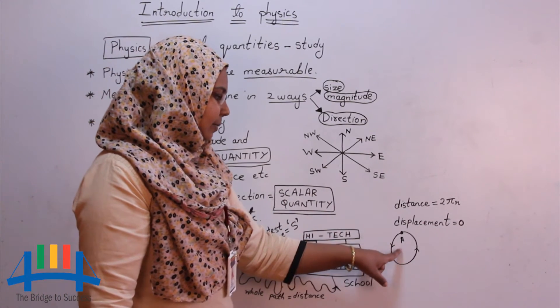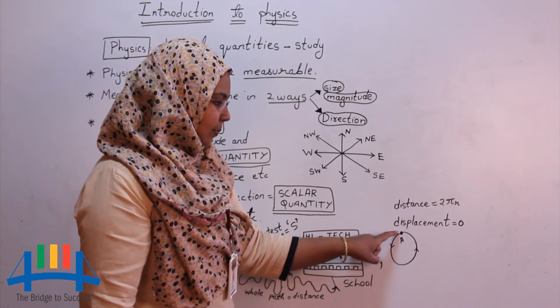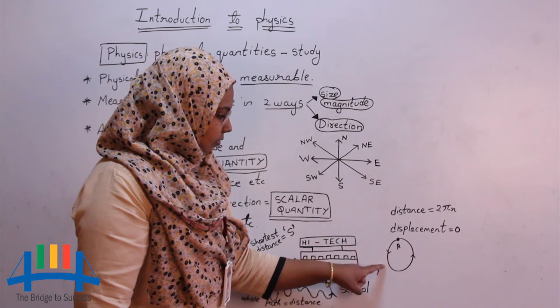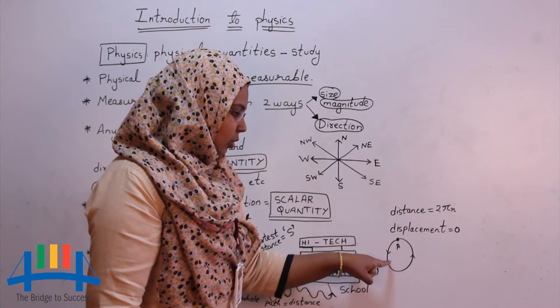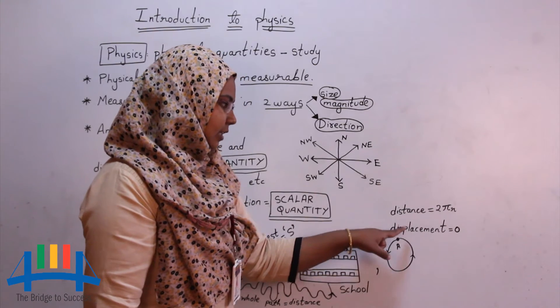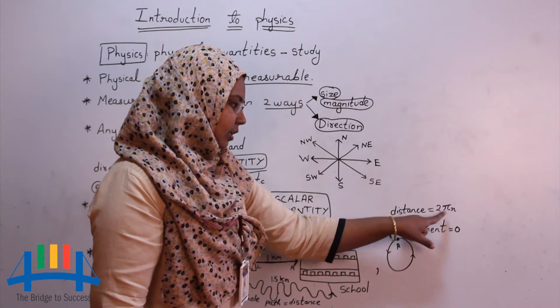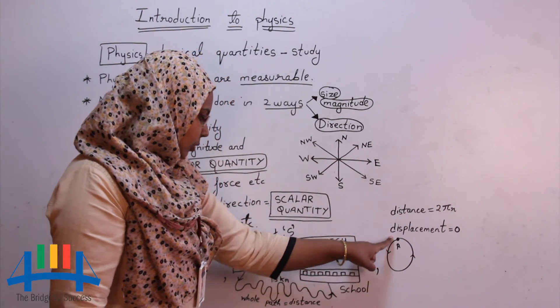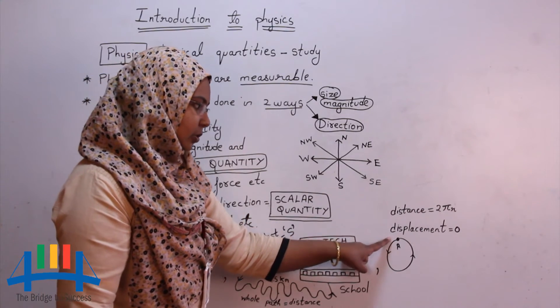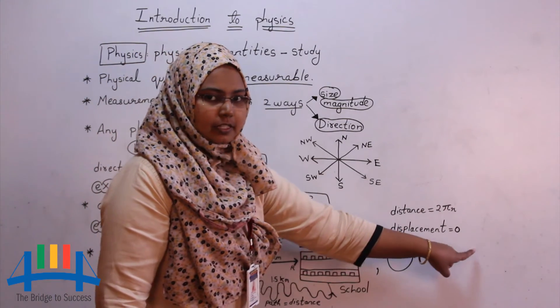One more example, a body started at point A and has come back to A. So here the whole path, the distance is 2 pi r. In this case, there is no shortest distance. So displacement here is 0.